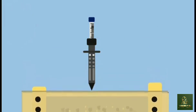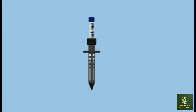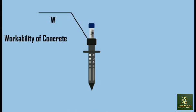Now remove the tester from the concrete vertically up and lower the measuring rod slowly till it touches the surface of the concrete retained in the tube. Note down the value on the graduated scale. Take it as W, which denotes the workability of concrete.